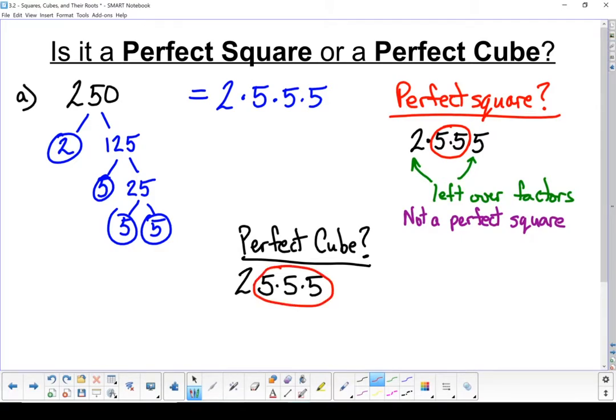But I've got another leftover factor here. Because we've got a leftover prime factor, it is not a perfect cube either. A perfect cube would have no leftovers. In this case, 250 is neither a perfect square nor a perfect cube.